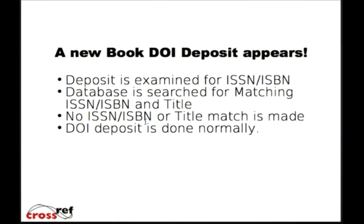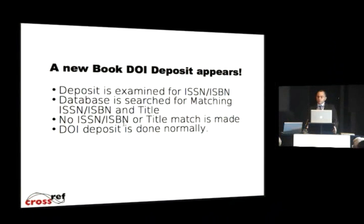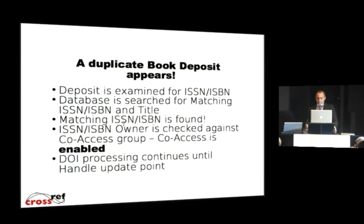This is the more specific flow. When somebody comes to deposit a new book, they go and deposit it, we look at the ISSN and ISBN, we look for matching ones, and since this is a new book nothing of the sort is found — so your DOI is deposited, no big deal. Somebody else comes along, they have the same ISSN or ISBN as yours, we find it, we check to see if you and they are both in a co-access group. CoAccess becomes active — you were both permitted and now we're enabled.